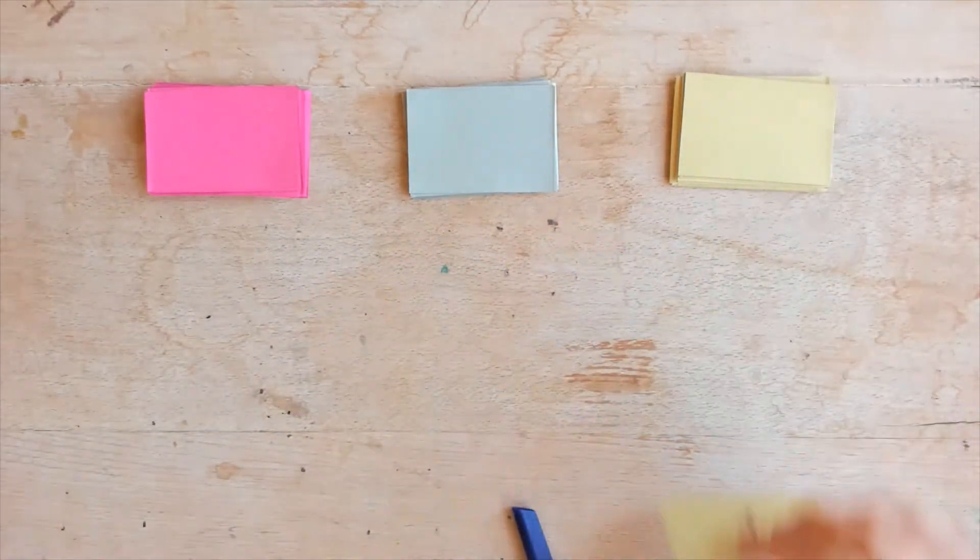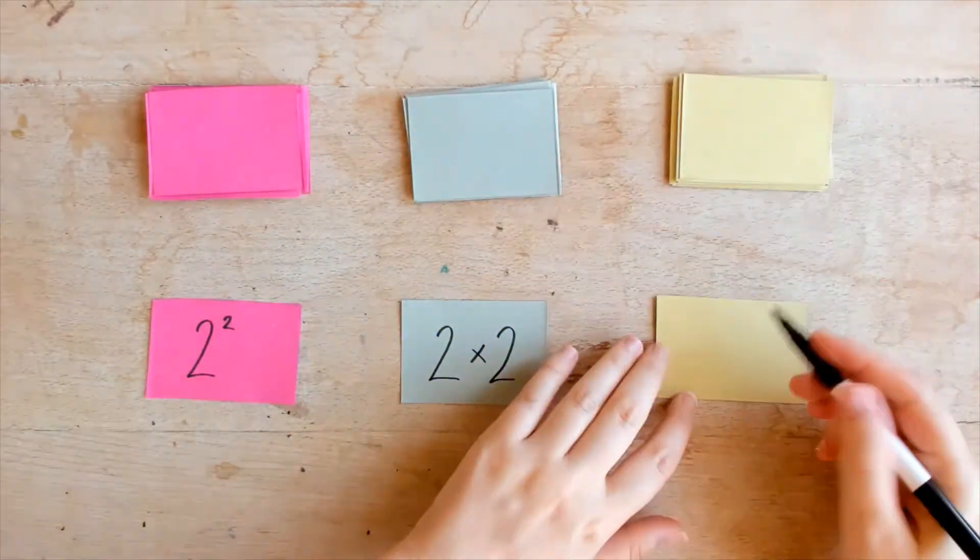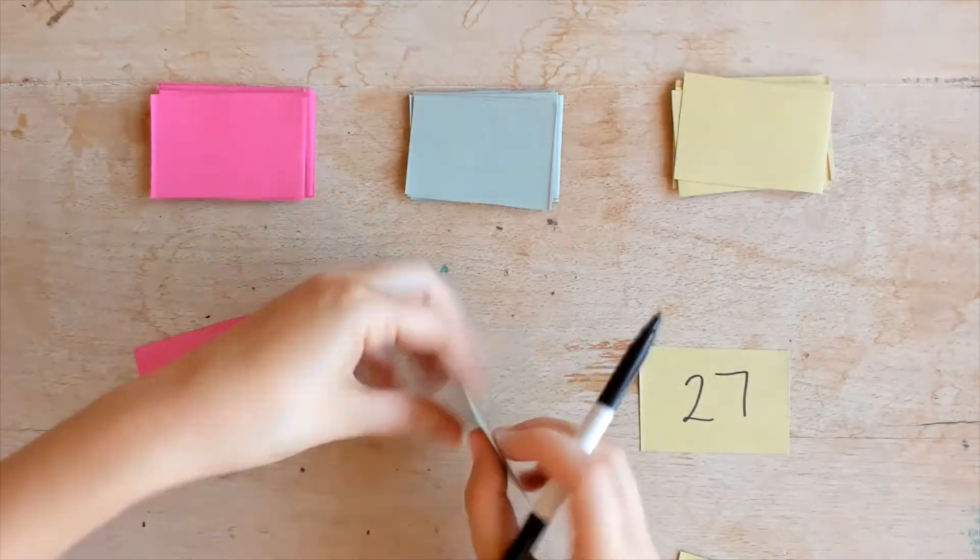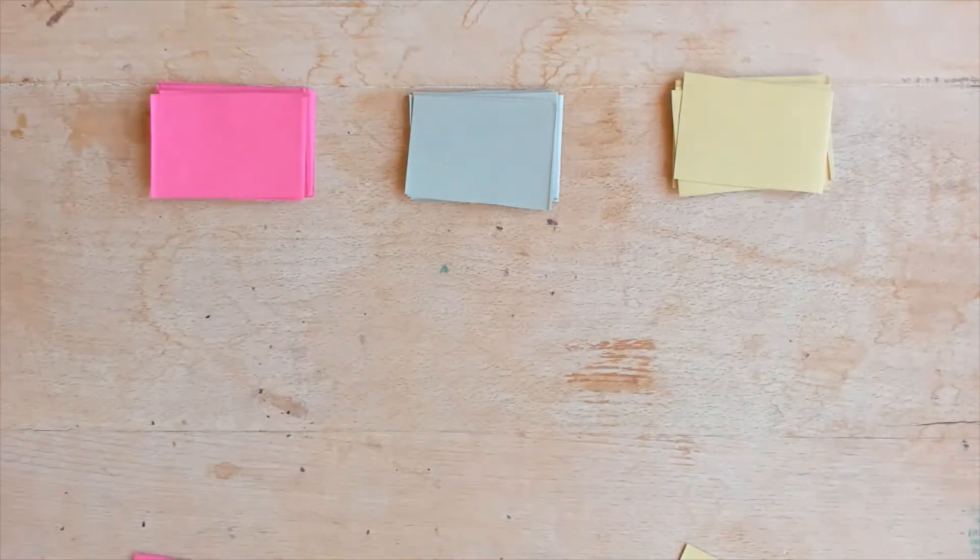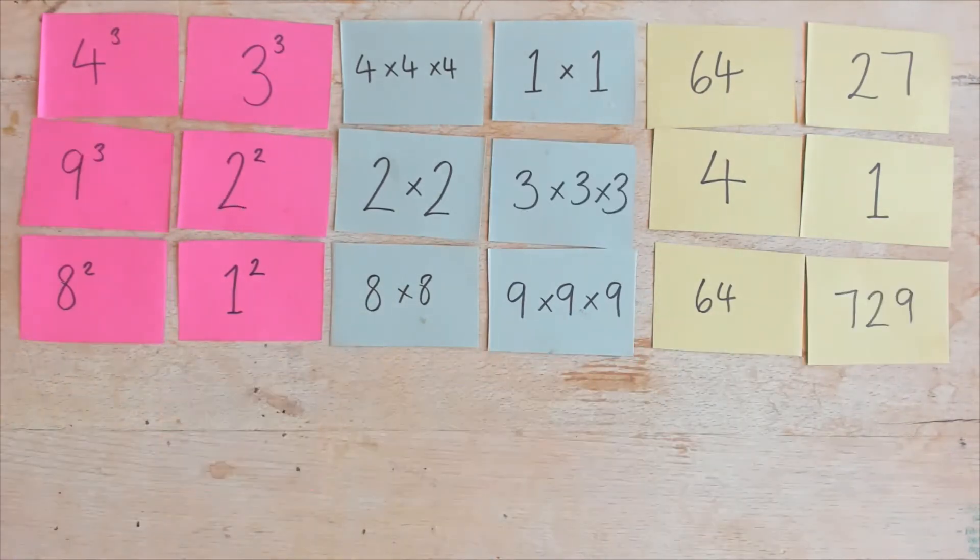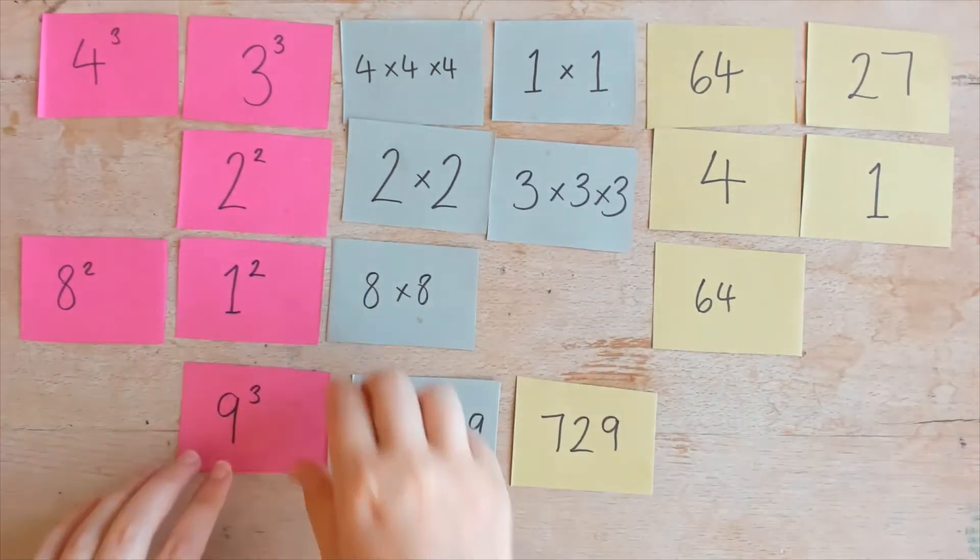For repeated practice and recall of squared and cubed numbers, why not make a card matching game? Use three different colours, one for the squared or cube notation, another for the written calculation, and a third for the value. Identify matching trios with a matching symbol on the back. Can your learners identify trios of matching cards all with the same value?